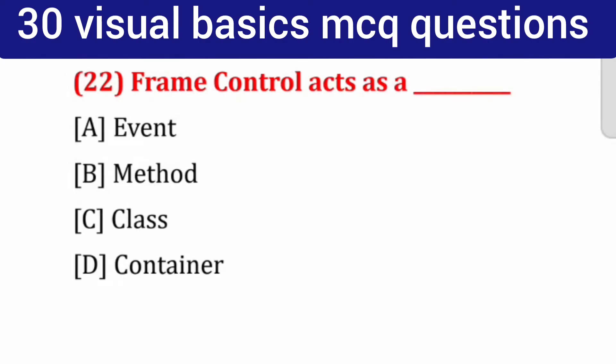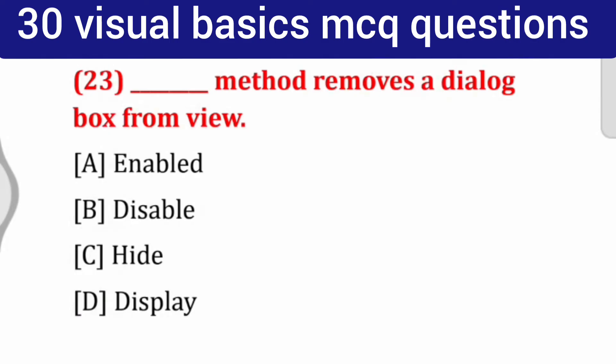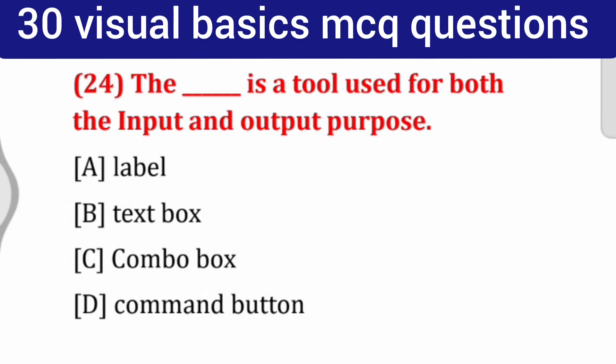Question number 23: ___ method removes a dialog box from view. Options: enabled, disable, hide, display. Correct answer: hide. Question number 24: ___ is a tool used for both the input and output purpose. Options: label, text box, combo box, command button. Correct answer: text box.